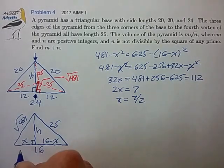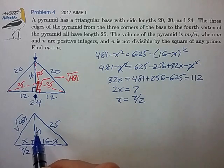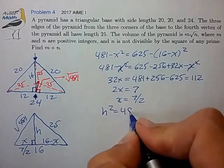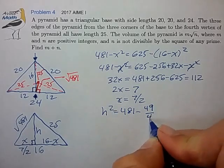That's not too bad. So this length here is 7 halves, and we can use this triangle now to figure out H. So H squared is just 481 minus the square of that, 49 over 4.